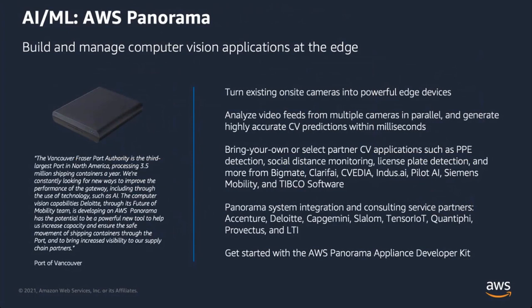We also have AWS Panorama — an appliance you can buy from AWS and deploy on site. The key thing is you can plug it into your existing on-site cameras if you already have them, significantly reducing costs. Using partner-selected computer vision applications from BigMate, Pilot AI, Siemens, or TIBCO, you can get out-of-the-box capabilities like PPE detection and social distance monitoring, or create and modify your own computer vision models. For larger deployments, system integrators such as Accenture, Deloitte, and Tensor IoT can help with at-scale deployment of AWS Panorama.